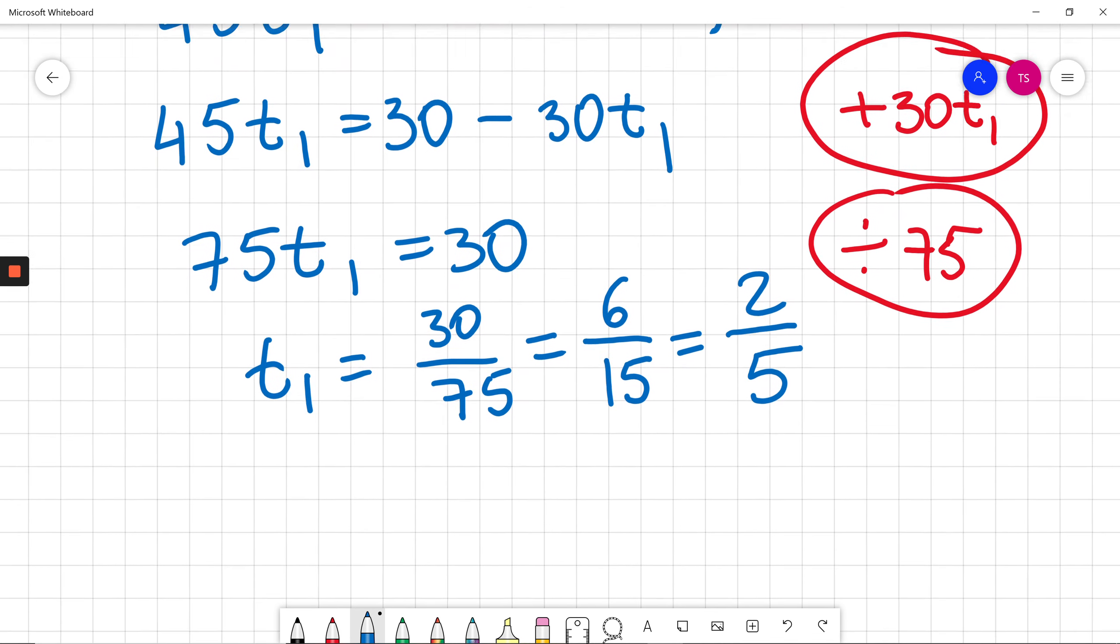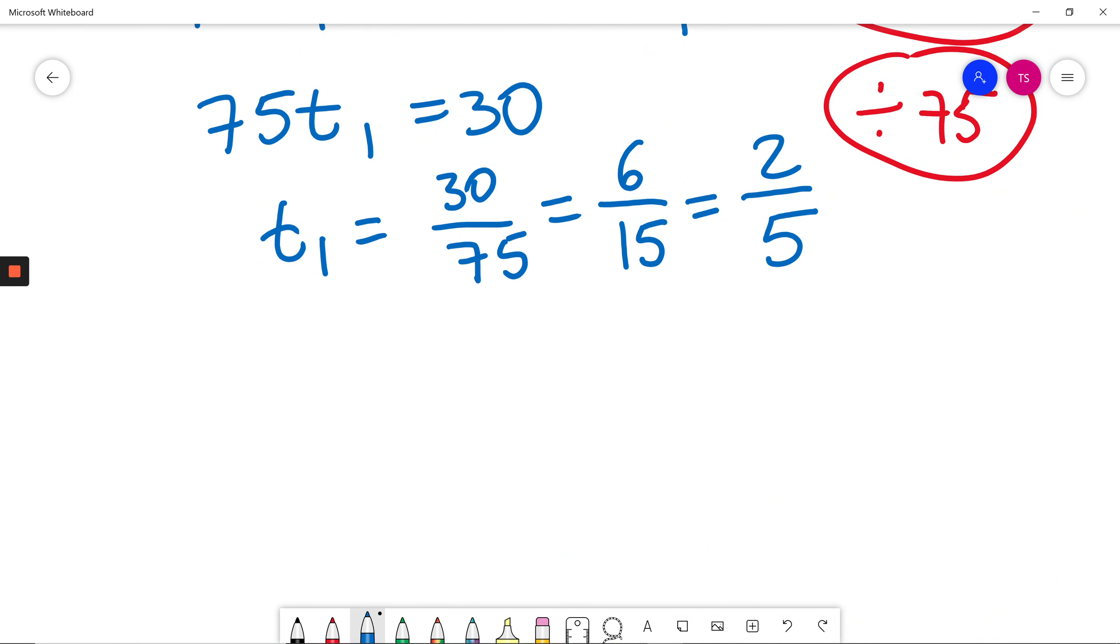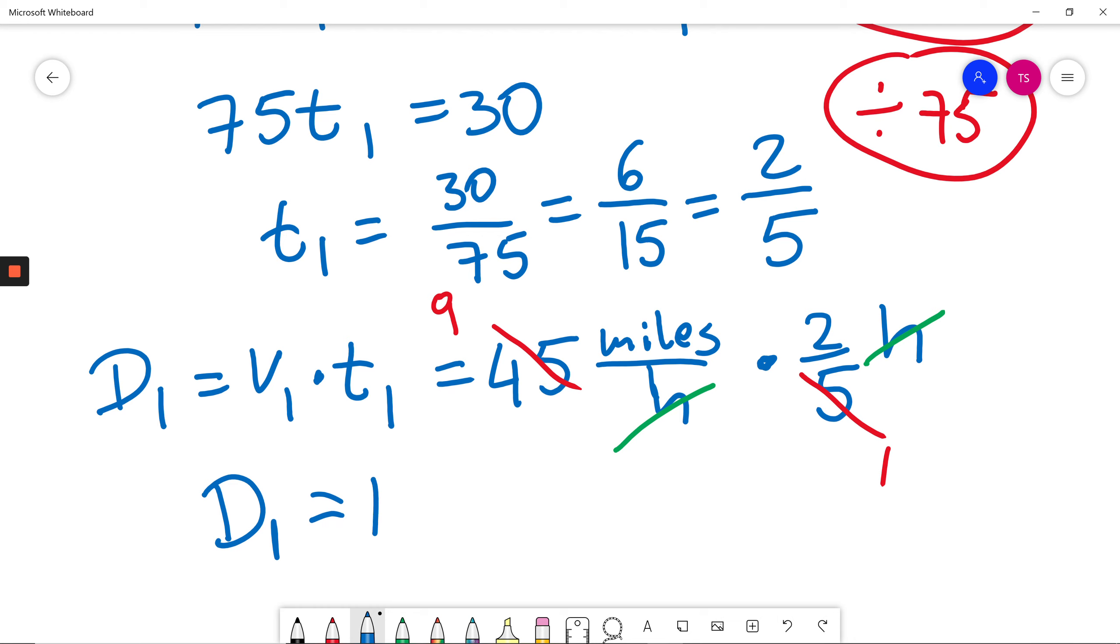So T1 is 2 fifths of an hour. So how many miles did Anna drive to work? I am coming back to my D1. D1 is speed 1 times time 1. V1, this was 45 miles per hour. And T1 is 2 fifths of an hour. I can simplify hour, one of them in numerator, one of them in denominator, so hour divided by hour is just 1. And I also can simplify 45 divided by 5. How many fives in 5? 1. How many fives in 45? 9. So now D1 distance from home to work will be just 9 times 2, which is 18 miles.